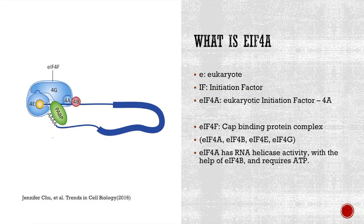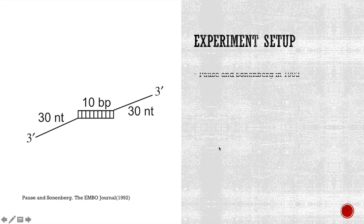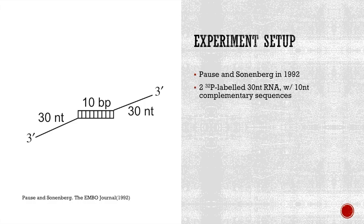So, how do we know that EIF4A has this helicase activity? Let's look at the experiment performed by Pauls and Sonjongberg in 1992. This experiment is described in Figure 17.21 in the book Molecular Biology, 5th edition, written by Weaver. The setup of the experiment is that authors manufactured two single-stranded, 30-nucleotide long, 32-phosphorus-labeled RNA with 10 base pair complementary sequences at the 5' end of each. Therefore, two single-stranded RNA can anneal to each other at the 10 base pair complementary region and form duplex.